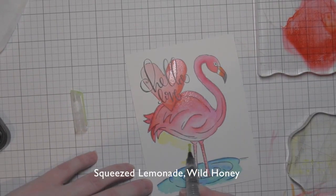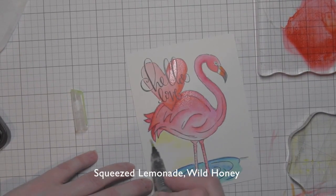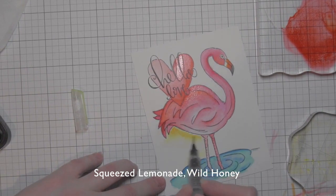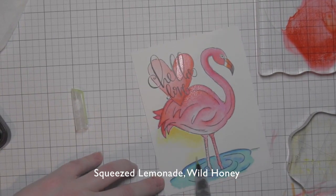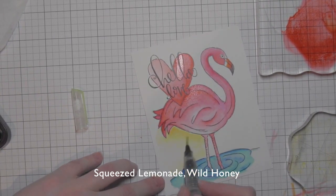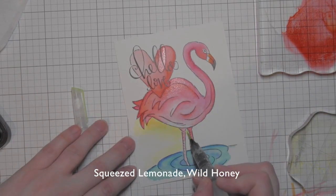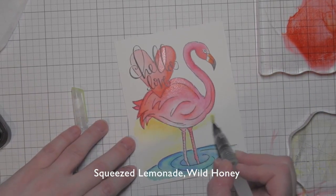For the background, I'm combining squeezed lemonade and wild honey distress inks. I wanted to do something different, something that would contrast and really highlight the flamingo. So I went with the yellows.